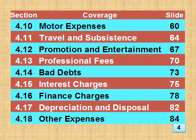Section 4.10 Motor Expenses is on slide 60. Section 4.11 Travel and Subsistence is on slide 64. Section 4.12 Promotion and Entertainment is on slide 67. Section 4.13 Professional Fees is on slide 70. Section 4.14 Bad Debts is on slide 73. Section 4.15 Interest Charges is on slide 75. Section 4.16 Finance Charges is on slide 78. Section 4.17 Depreciation and Disposal is on slide 82. Section 4.18 Other Expenses is on slide 84.